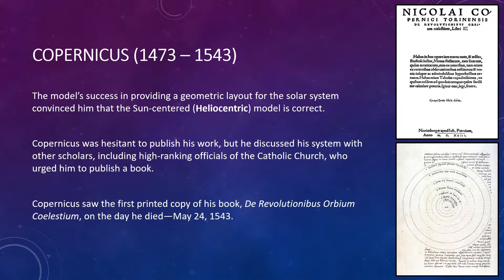Despite his own confidence in the model, Copernicus was hesitant to publish his work, fearing that his suggestion that the Earth moved would be considered absurd. However, he discussed his system with other scholars, including high-ranking officials of the Catholic Church, who urged him to publish a book. Copernicus saw the first printed copy of his book — which translates to 'Concerning the Revolutions of the Heavenly Spheres' — on the day that he died, May 24, 1543.